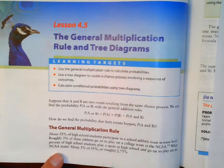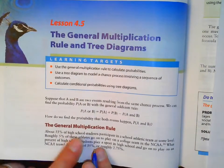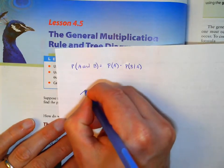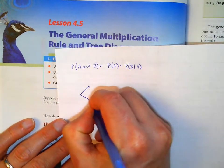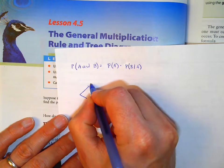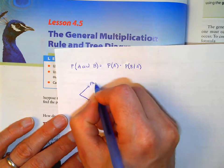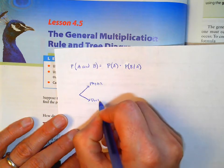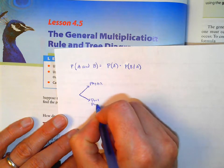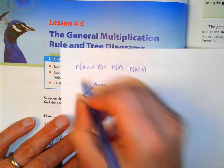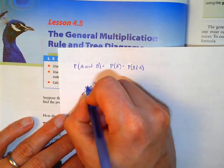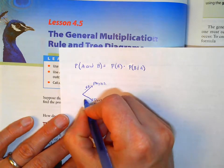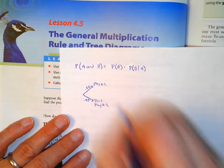Here's an example. About 55% of high school students participate in a high school athletic team. If I use a tree diagram, either they play high school sports or they don't. It's saying 55% play, which means 1 minus that — 45% — don't play high school sports.